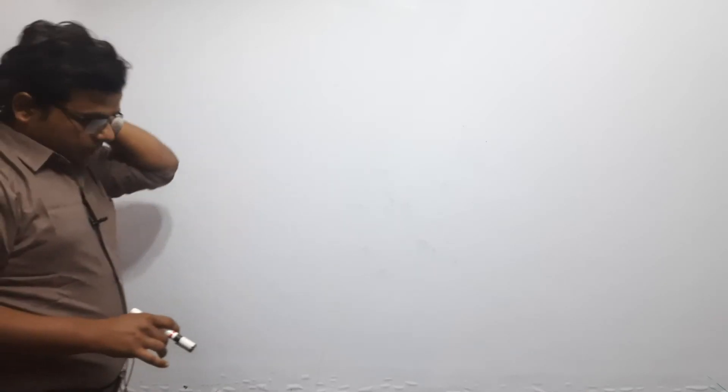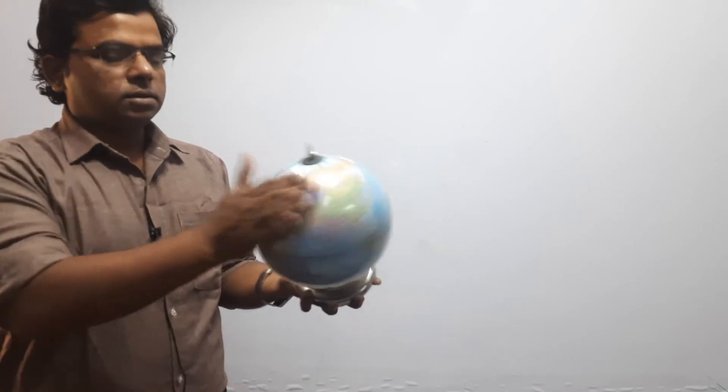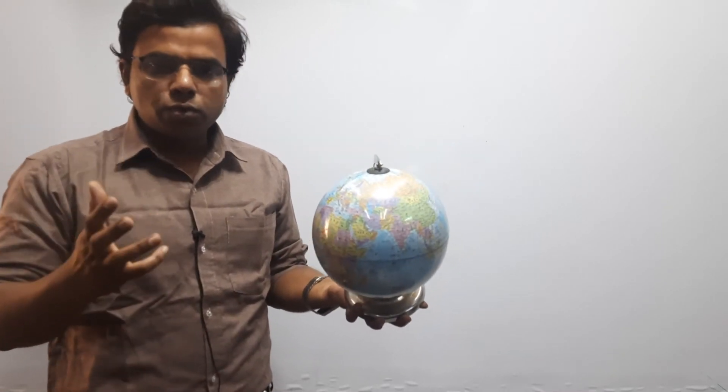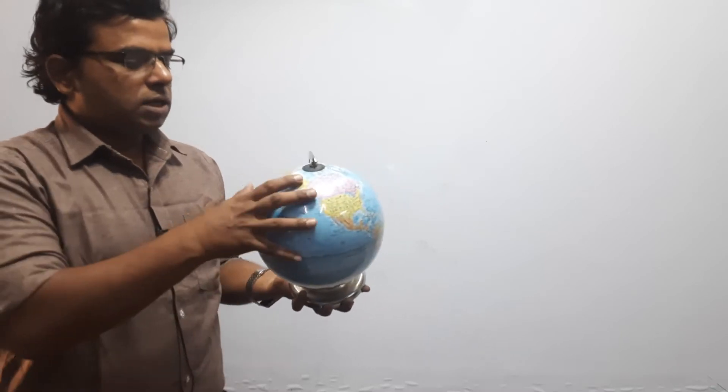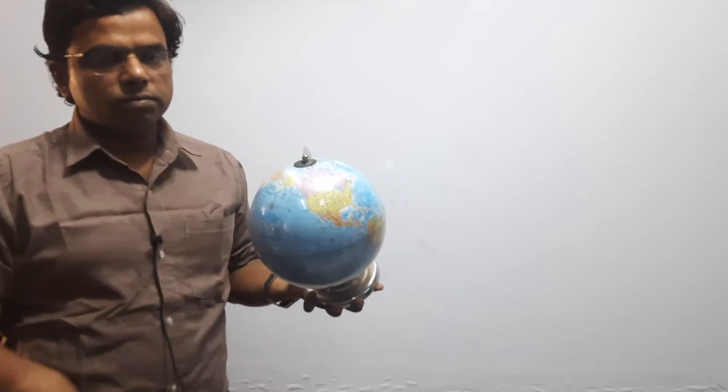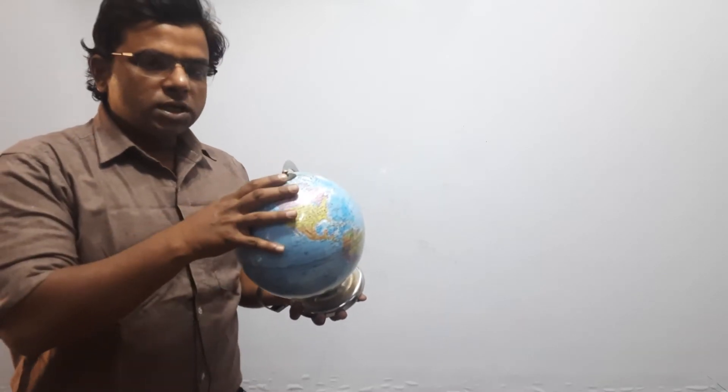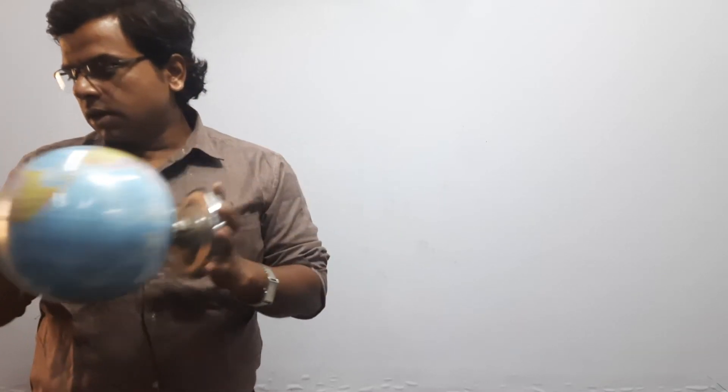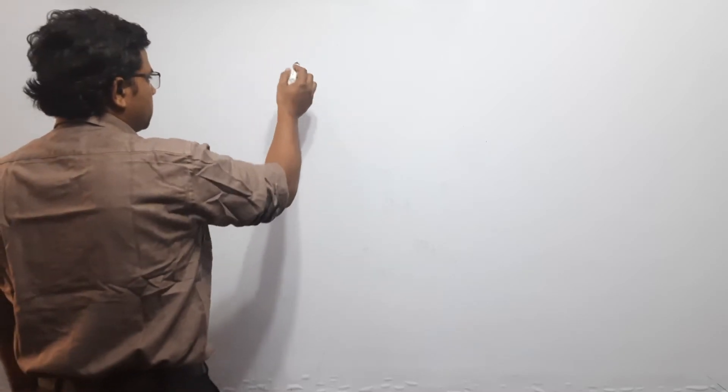The first important terminology is the globe. As discussed in the previous chapter, the globe is a true but miniature model of the earth. In the globe we see the earth in a complete spherical form, but naturally the earth is not in an ideal sphere form — there is some compression at the poles.